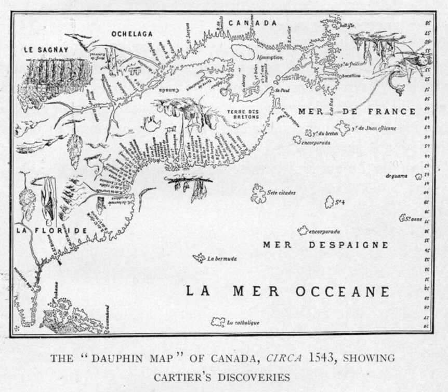European explorer Jacques Cartier transcribed the word as "Canada" and was the first European to use the word to refer not only to the village of Stadacona but also to the neighbouring region and to the St. Lawrence River, which he called "Rivière de Canada" during his second voyage in 1535. By the mid-1500s, European books and maps began referring to this region as Canada, which became the name of a colony in New France stretching along the St. Lawrence River. The terms "Canada" and "New France" were often used interchangeably during the colonial period.